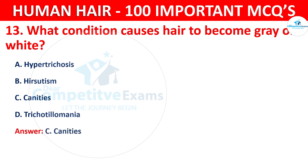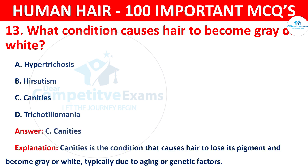The correct answer is C — canities. Canities is the condition that causes hair to lose its pigment and become grey or white, typically due to aging or genetic factors.